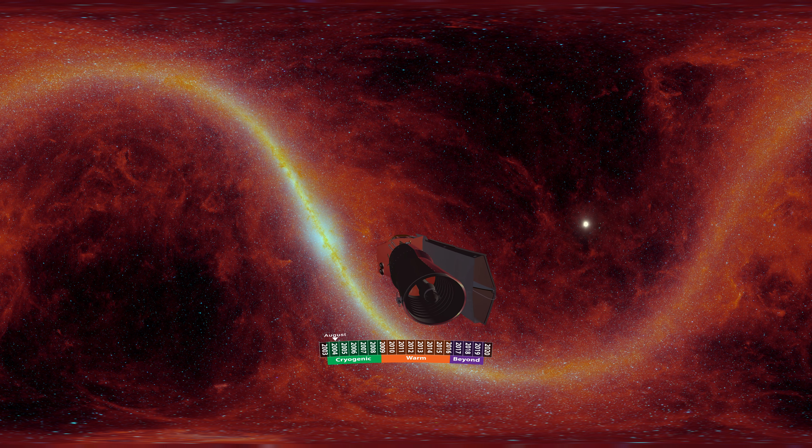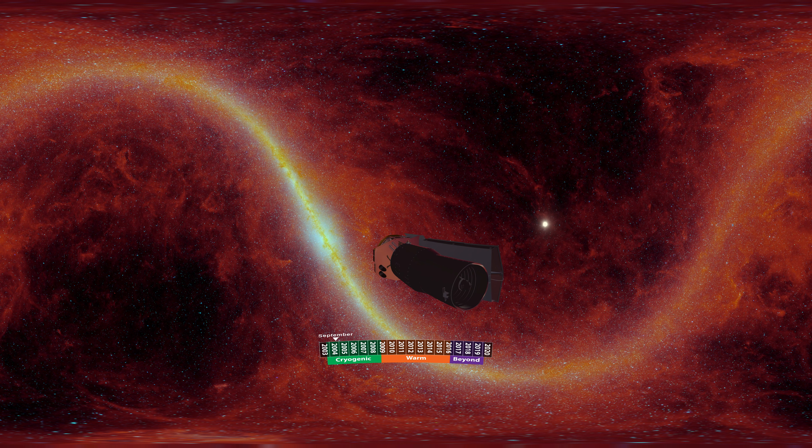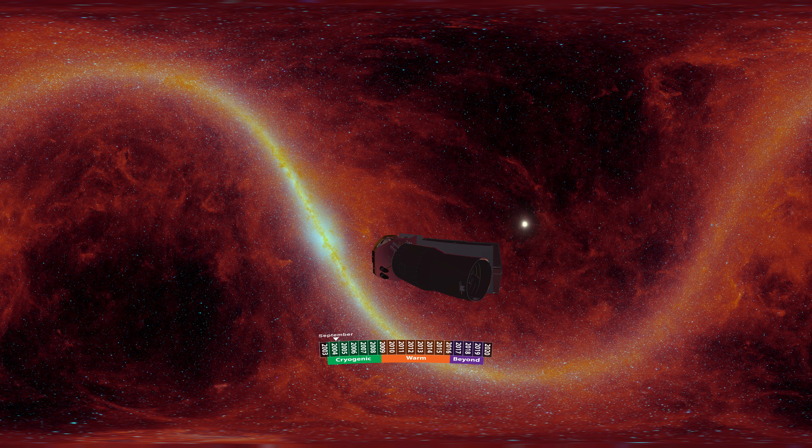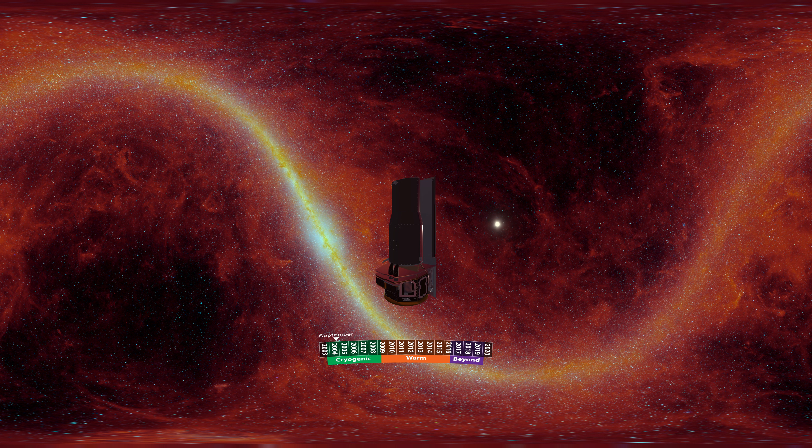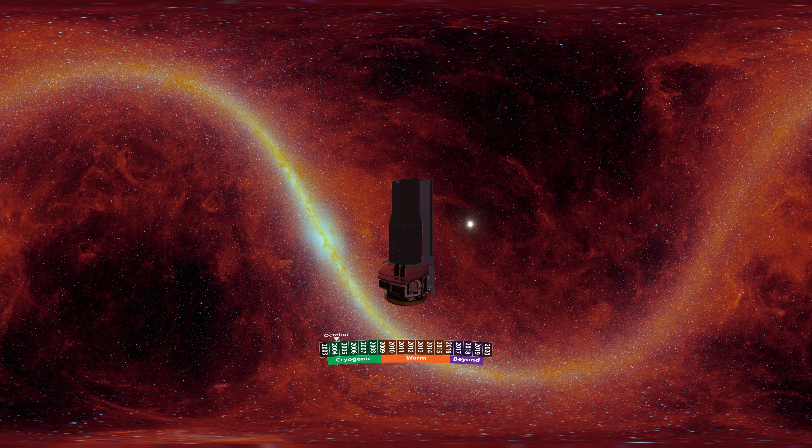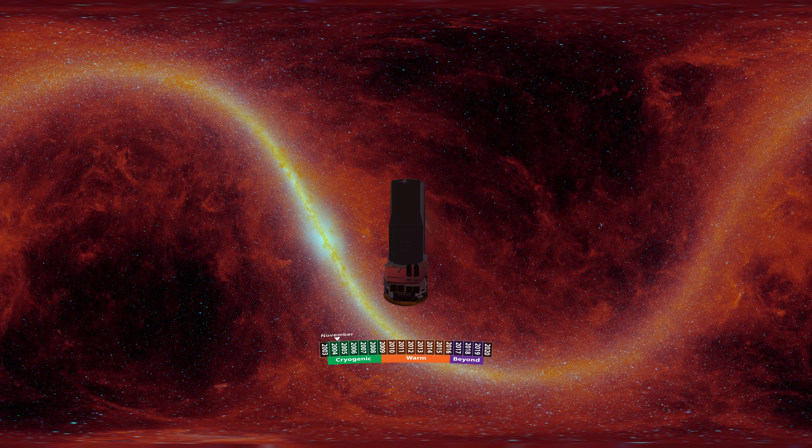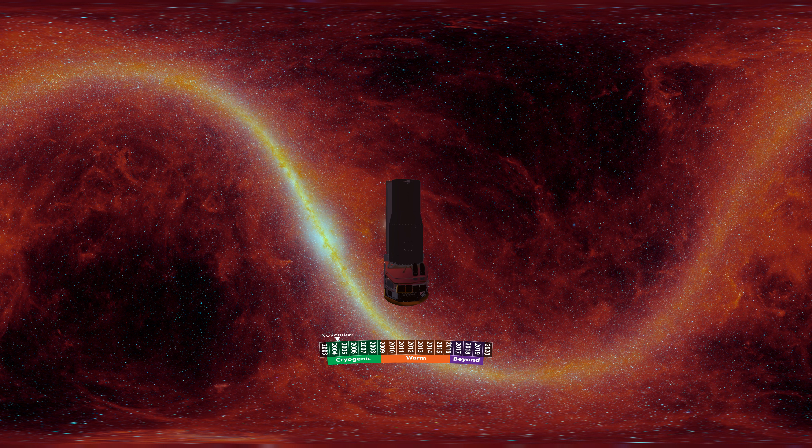But how was Spitzer able to observe the universe in infrared light? During Spitzer's initial cryogenic mission, its instruments were cooled down to a few degrees above absolute zero using a supply of liquid helium. At these low temperatures, its detectors were sensitive to the full range of the infrared spectrum, most of which is blocked by Earth's atmosphere. A shield covered with solar panels further protected the telescope from the sun's heat while providing power.